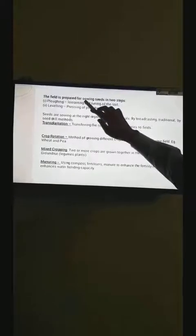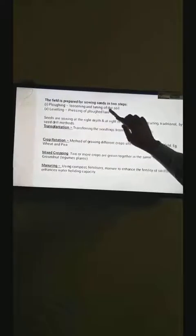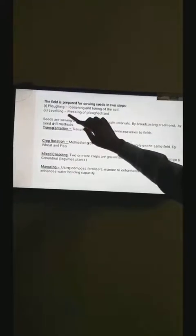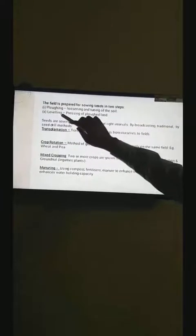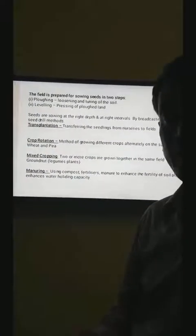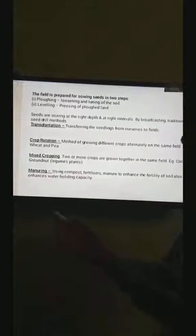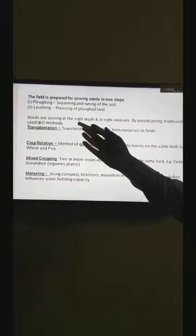Farmers prepare the field for sowing the seeds in two steps. In first step, loosening and turning of the soil which is known as plowing. And second step, pressing of plowed land. This process is known as leveling. You know that earthworms are known as farmer's friend because these earthworms live in the soil and also help to turn and loosen the soil by burrowing action.